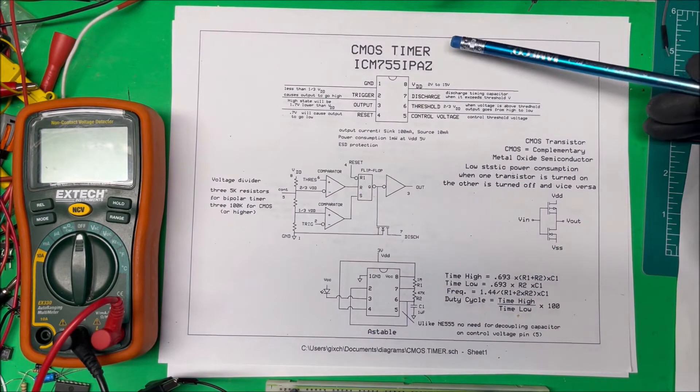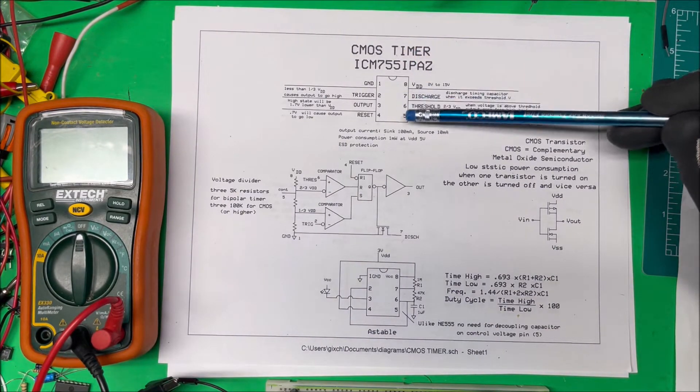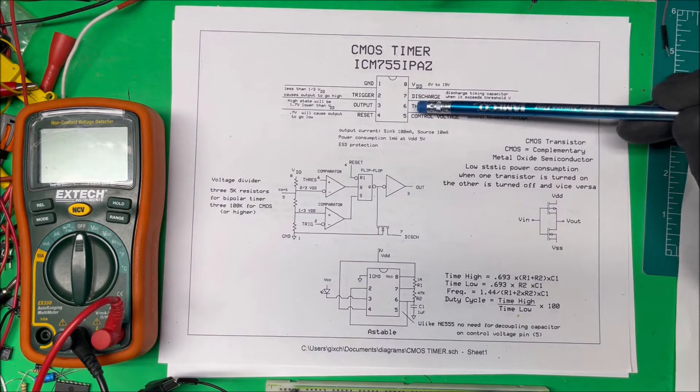Let's take a look at a CMOS timer. I'm using an ICM 755. Now they're compatible with the standard 555 timers, you know, just your Jellybee timer. But these use CMOS transistors.